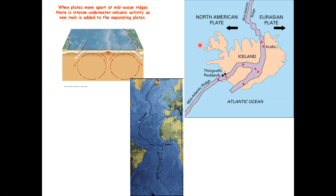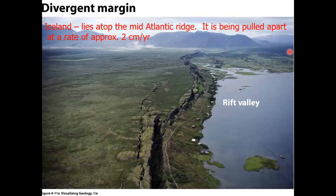Thingvellir Valley is one of the big tourist attractions in Iceland. You can walk down into this rift valley — there's water that collects here, and you can dive in and put one hand on the North American Plate and the other on the Eurasian Plate. This is the Rift Valley of Iceland, and it looks very similar to the Rift Valley of Africa — water collecting in the middle, faults on the sides, stretch marks.